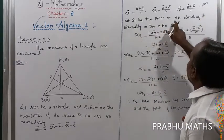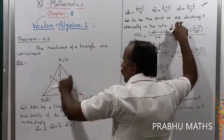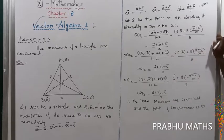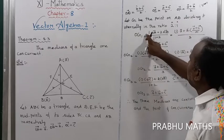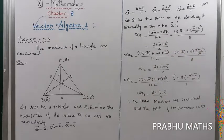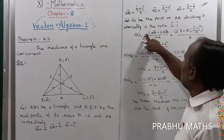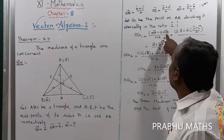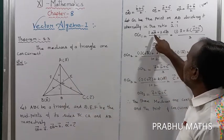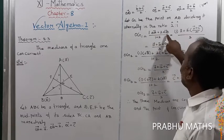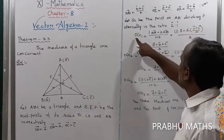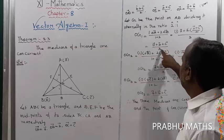Now consider G1 on median AD, dividing it in the internal ratio 2:1. Using the section formula, OG1 = (1 × OA + 2 × OD) / (1 + 2). Substituting OA = A and OD = (B + C) / 2, the 2 cancels, giving OG1 = (A + B + C) / 3.